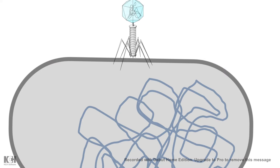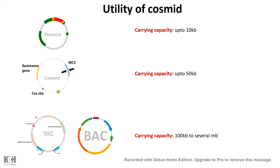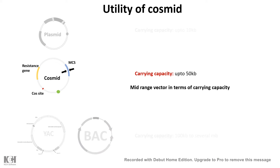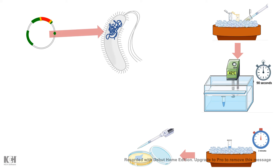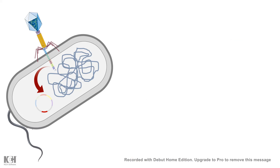When the phage infects and injects its DNA inside the bacteria, the cosmid circularizes because its cos sites — the cohesive ends — allow circularization. In terms of utility, cosmids are mid-level carrying capacity vectors: their capacity is not as low as plasmids but not as high as BACs or YACs. Their biggest advantage over plasmids is delivery efficiency — with plasmids you need heat shock transformation, which is not 100% efficient, but delivering genes via cosmids through phage infection is very efficient, as phage infects almost every E. coli it encounters.